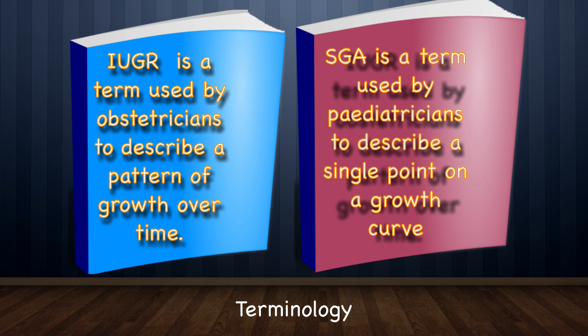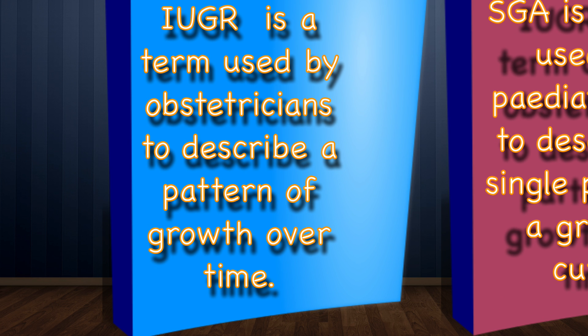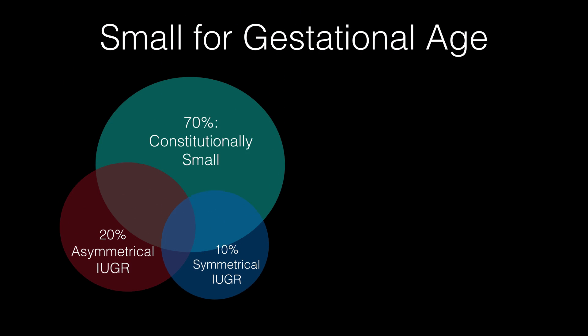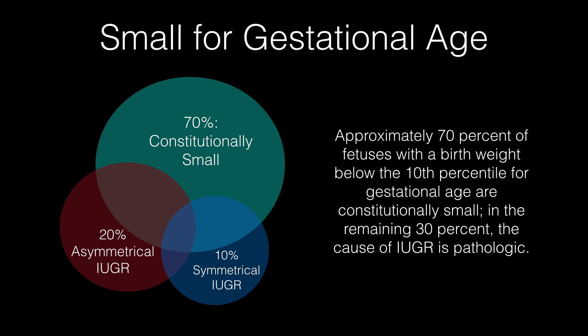The term intrauterine growth restriction is frequently used interchangeably but incorrectly with small for gestational age. IUGR is the pathologic counterpart of small for gestational age; it is a term used by obstetricians to describe a pattern of growth over time. The term SGA includes two types: constitutionally small babies and IUGR babies. Approximately 70% of fetuses with a birth weight below the 10th percentile are constitutionally small. In the remaining 30%, the cause is pathologic — of these, 20% are asymmetrical and 10% are symmetrical.